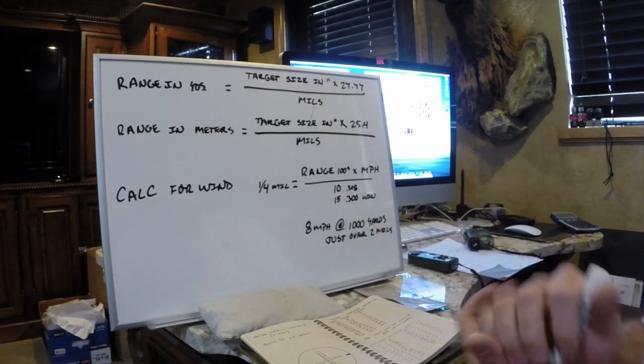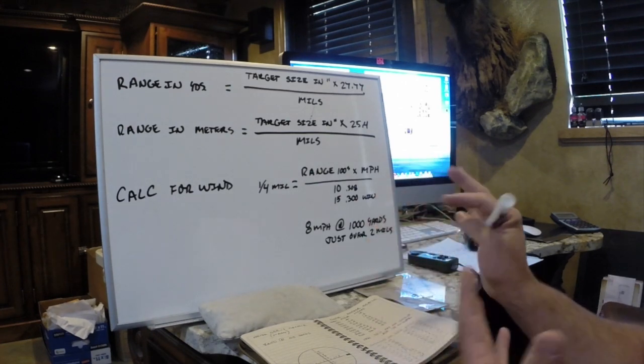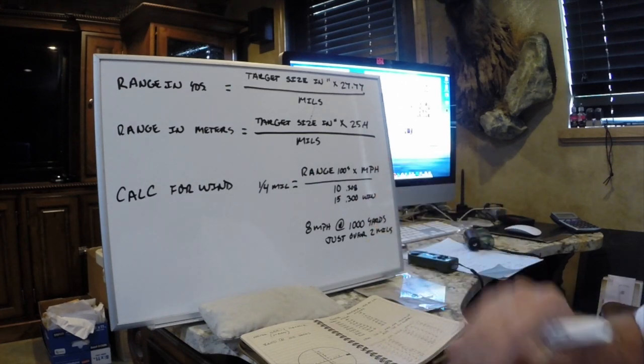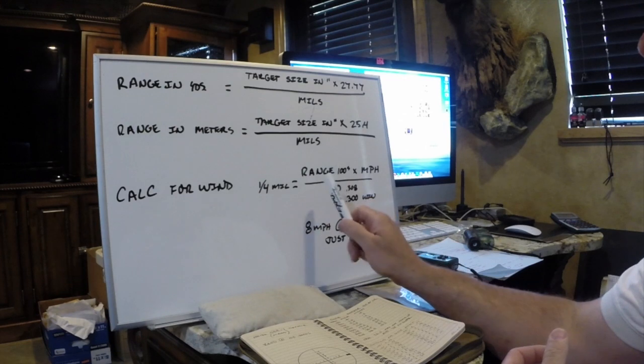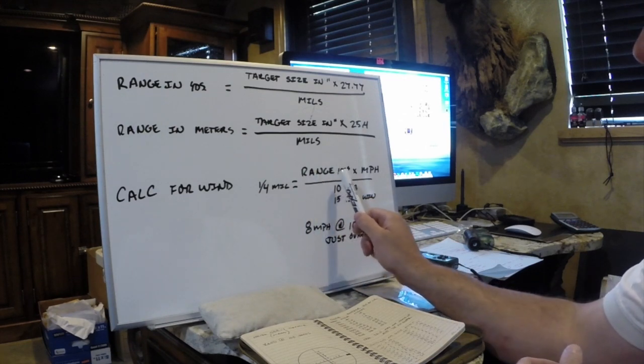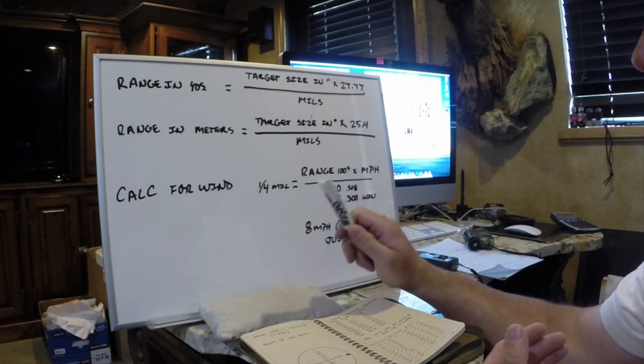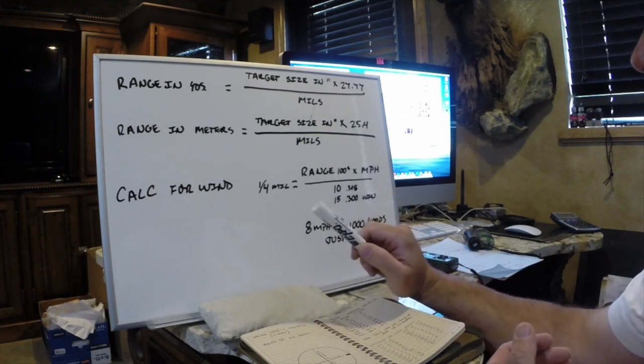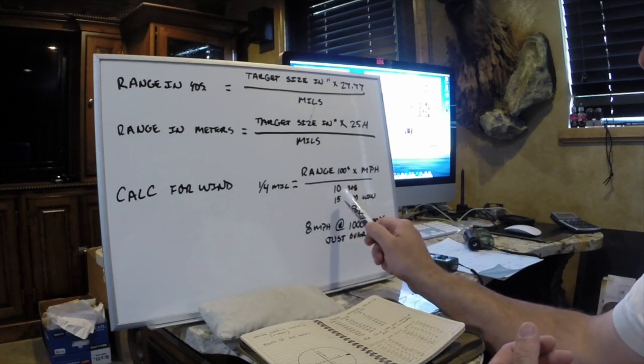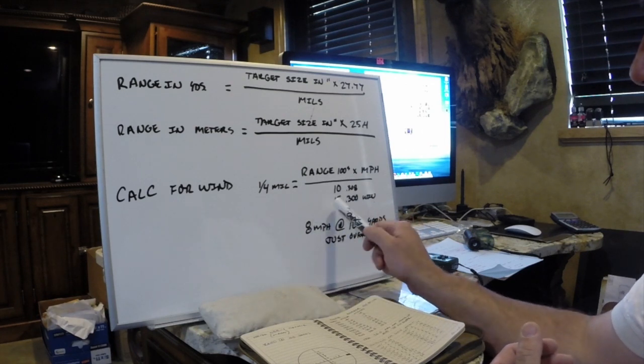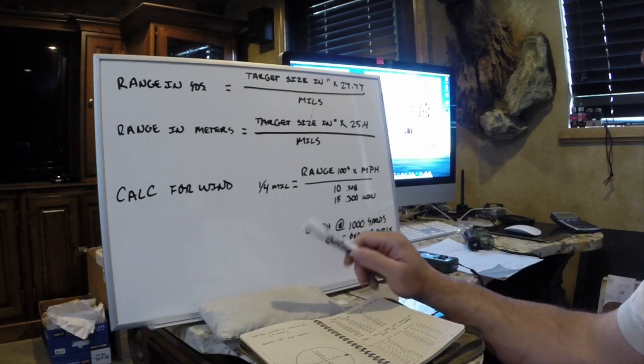To count wind, wind is a little trickier because it changes. And the way to do that, it's a similar formula. We're going to take our range in hundreds. So if I'm at 600 yards, it's going to be 600 times the mile per hour of the wind, divided by 10 for .308 or divided by 15 for .300 win mag.